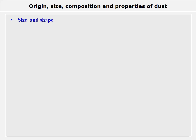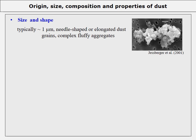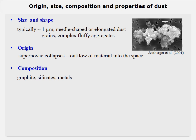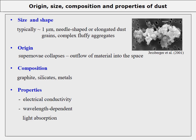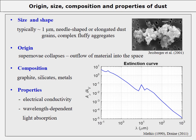A few words about dust itself. The grains have a size on the scale of micrometers; they are needle-shaped or elongated, or can have a complex fluffy geometry. They are produced by supernovae collapses that outflow material into space, and are formed by graphite, silicates, and metals. The most important property of dust grains is their electrical conductivity and wavelength-dependent light absorption, as demonstrated by the extinction law. Light extinction strongly decreases with increasing wavelengths — for example, extinction at CMB wavelengths is at least four orders of magnitude lower than at visual wavelengths.